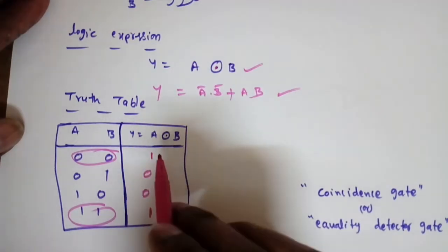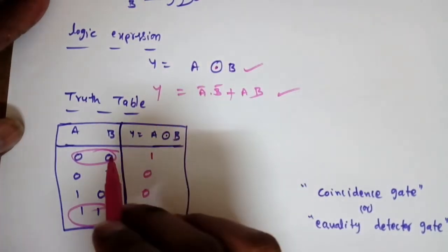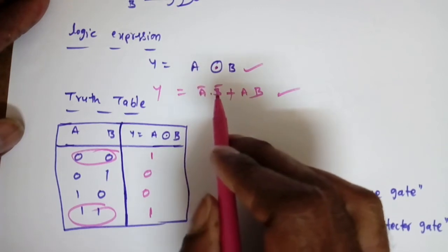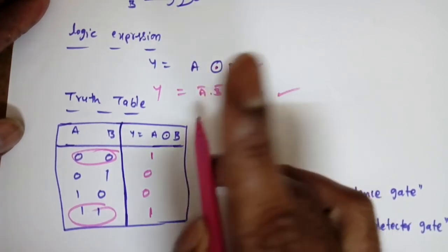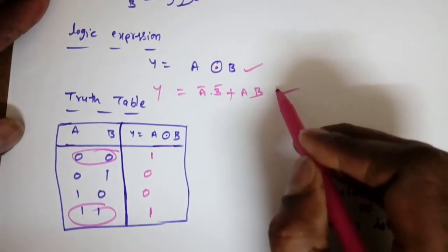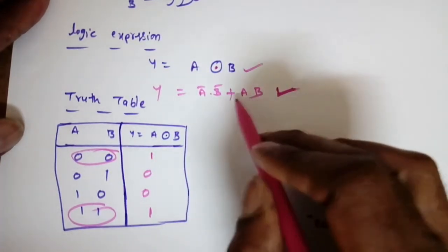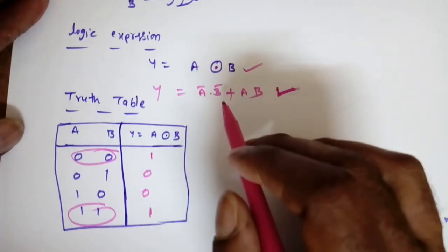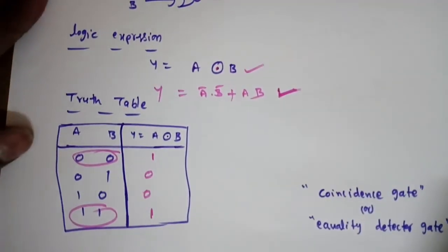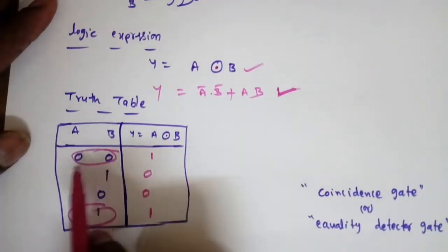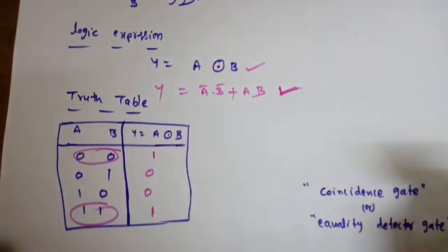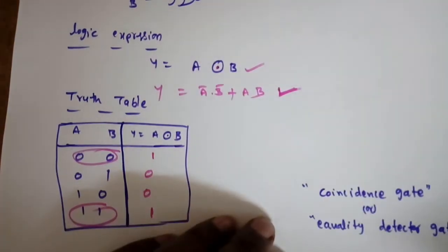The XNOR gate is called a coincidence gate or equality detector because when both inputs are equal, the output is logic high. The logic expression can be split: for combinations where output is high (both inputs 0,0 and both 1,1), we write A·B + Ā·B̄. Compare with XOR: A·B̄ + Ā·B. The XNOR gate is also called a comparator since it detects equality.